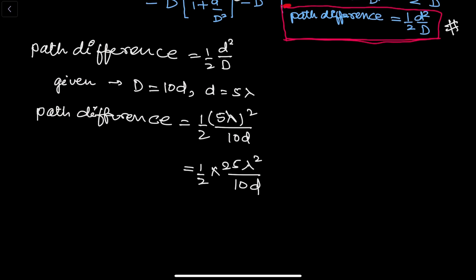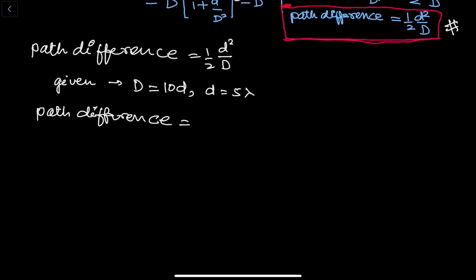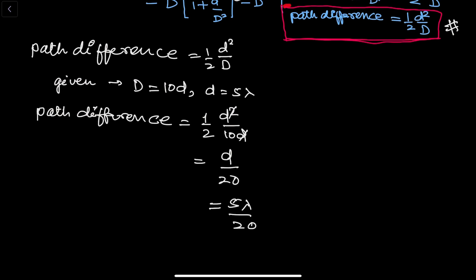Wait, there was a small mistake — let me remove d first for clarity. Substituting values: Δx = (1/2) × d² / (capital D) = (1/2) × d² / (10d). One d cancels, leaving d/20. Now substituting d = 5λ: Δx = 5λ/20. So our path difference is 5λ/20 = λ/4.